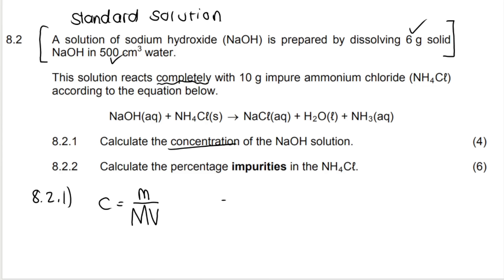So you write your formula first. Then your mass is 6 grams. Your molar mass, you work out on the periodic table. You take sodium, which is 23, you take oxygen, which is 16, and you take hydrogen, which is 1. You add those together, so the atomic mass numbers, and I get 40.